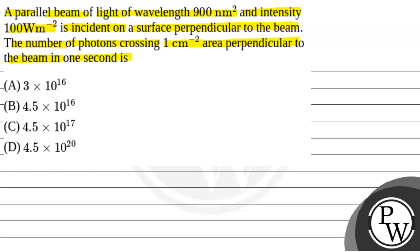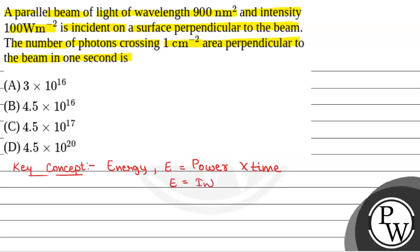We will solve this question. First of all, we will see what will be the key concept used in the question. The key concept will be: energy is equal to power multiplied by time. And power is equal to intensity into area. So, energy is equal to intensity into area into time — that is E = IAT. This is the formula for energy.